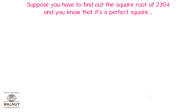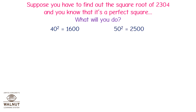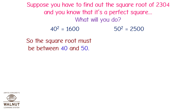Suppose you have to find out the square root of 2304 and you know that it is a perfect square. What will you do? 40 squared is equal to 1600, and 50 squared is equal to 2500. So the square root must be between 40 and 50.